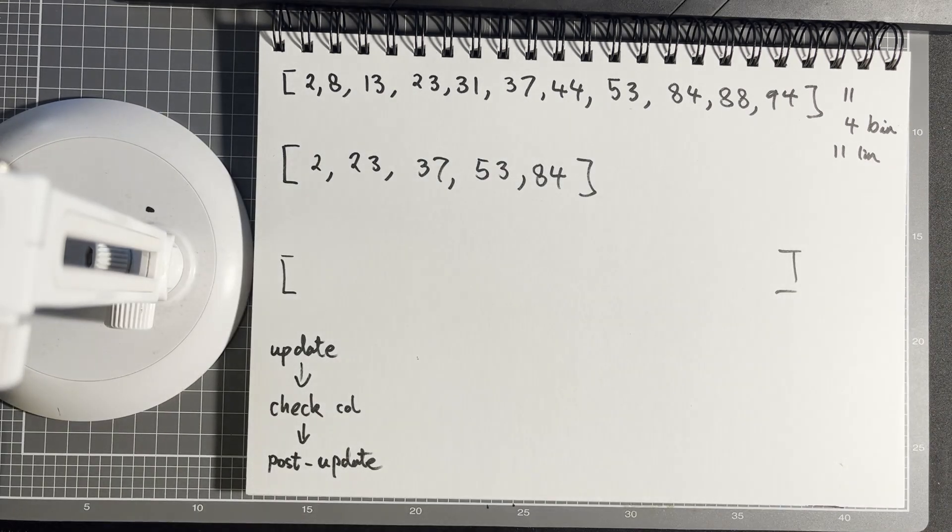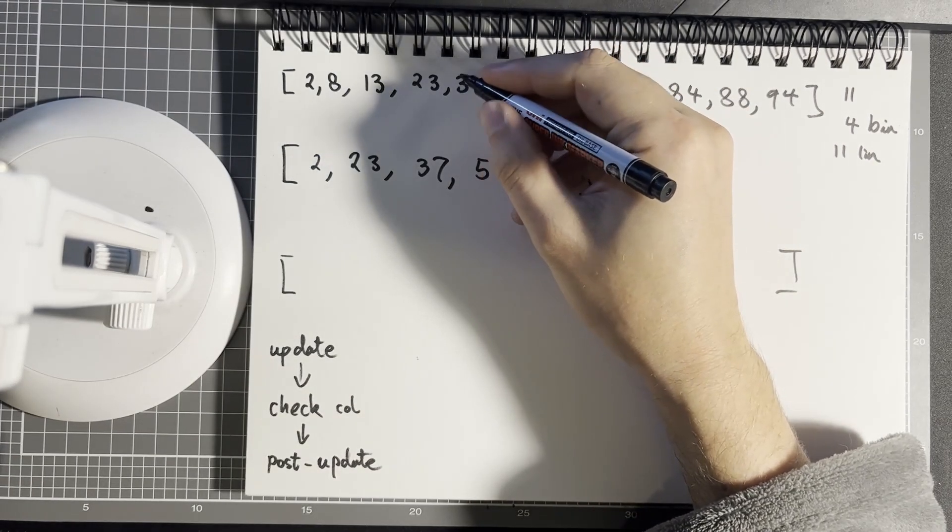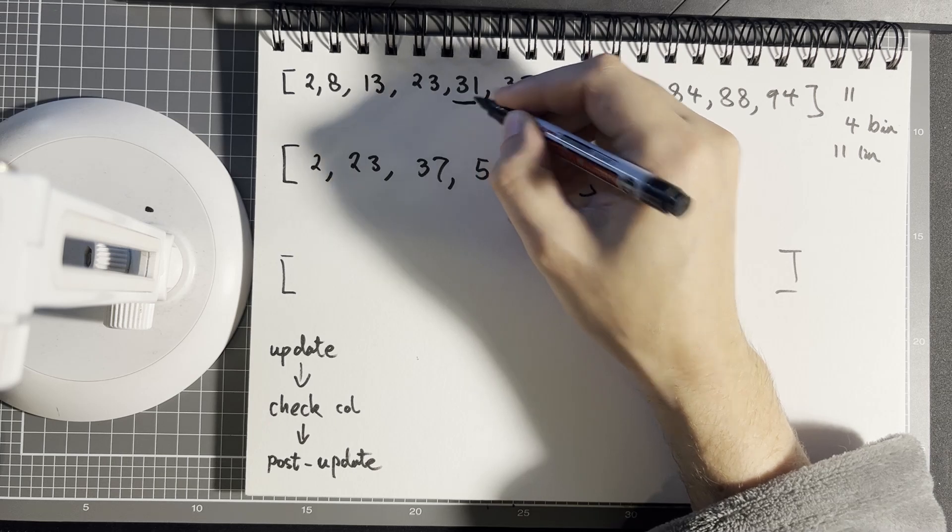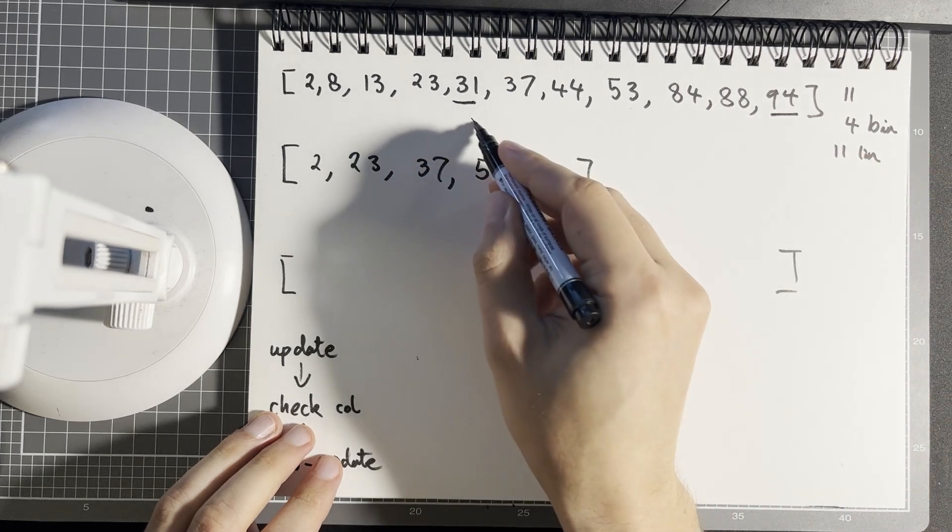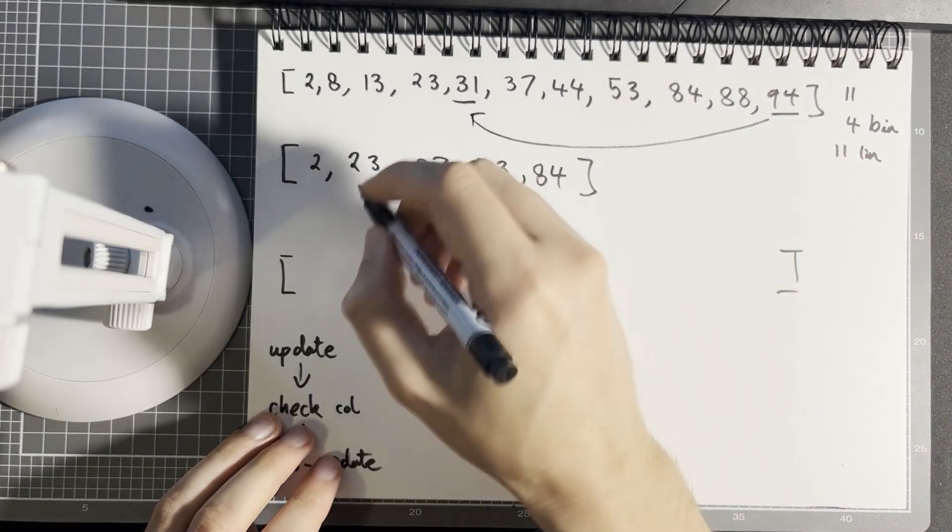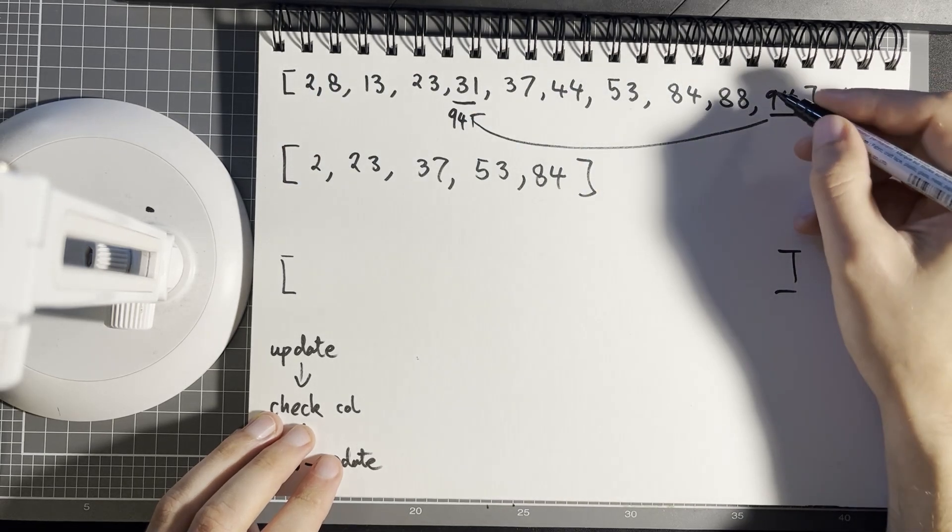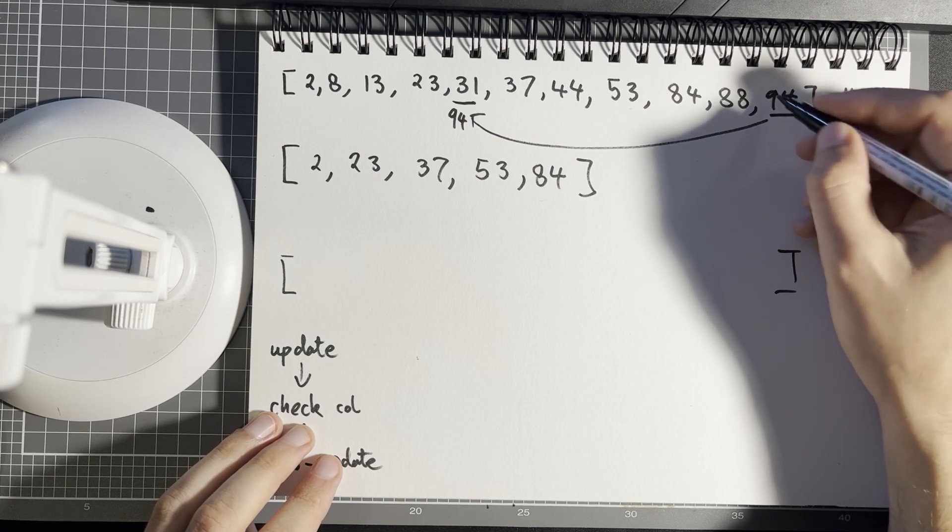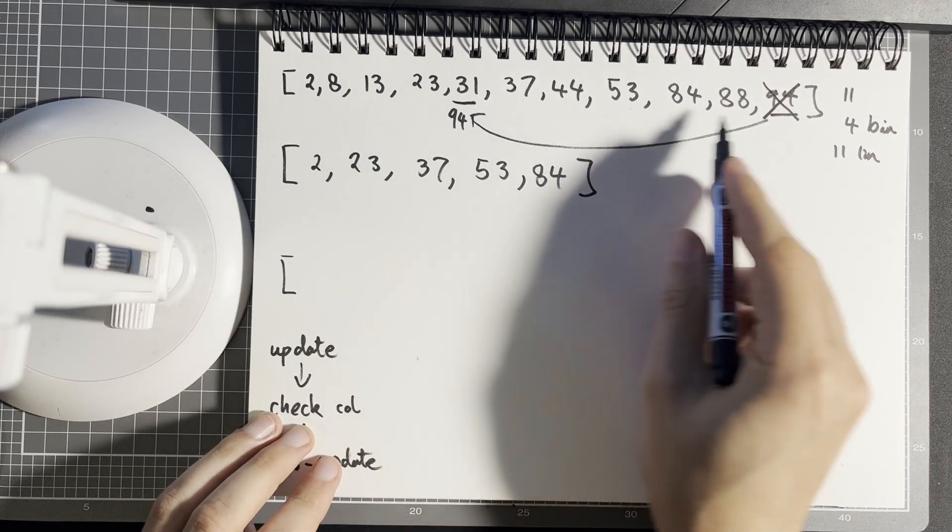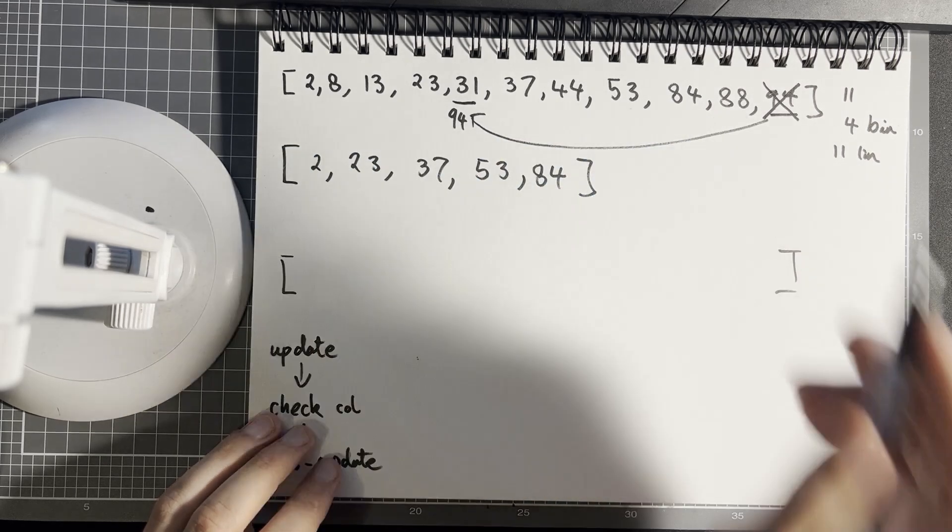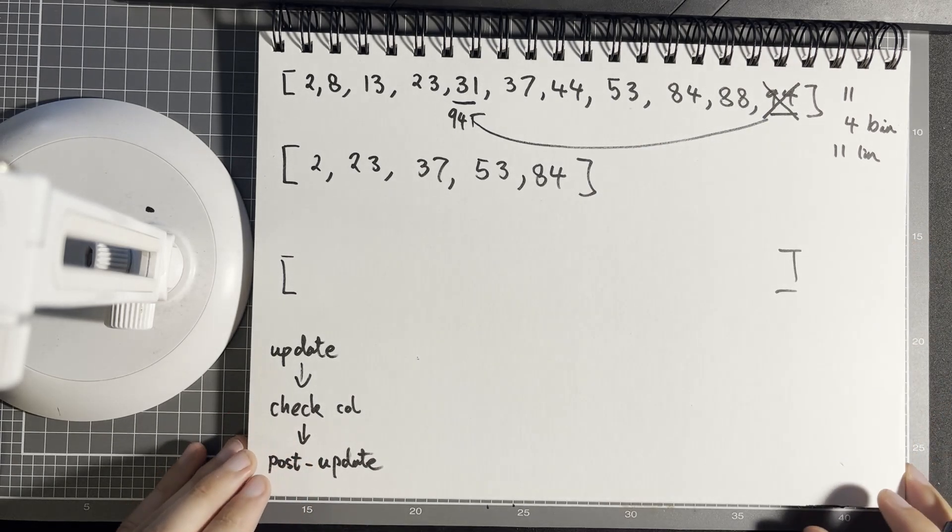So when we create things, we don't need to reorder everything, we can just throw it on the end. When we delete things, this is a classic pattern. Let's say I want to delete element 31. I don't need to search through everything, I can just grab the last element, bring it over, and then decrement my size by one.